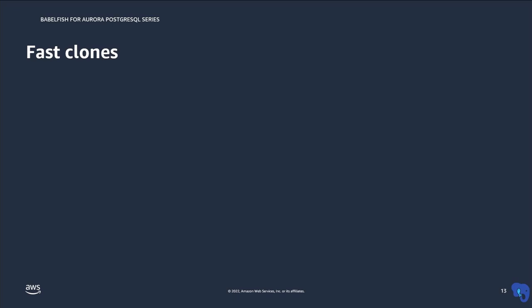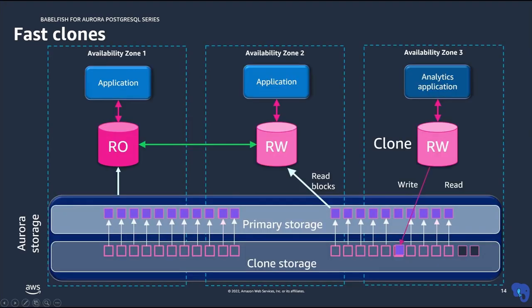Fast clones — let's see how fast clones work in Aurora. If you have a database with a size of 10 terabytes or even 30 terabytes, taking a copy of the database cluster only takes a couple of minutes. Here in this picture, there is an Aurora cluster with a writer and a reader attached to the primary storage. When you create a clone, the clone contains virtual storage with virtual pages that point to the pages in the primary storage. So the clone doesn't contain any physical data, and you won't be charged for the data since it doesn't contain any physical copy. All reads will point to the actual data in the primary storage.